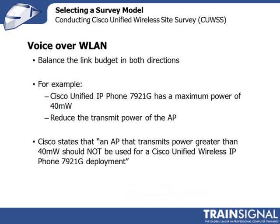IP phones run on a battery and manufacturers want to conserve that battery and make sure the phone is capable of lasting all day. There'd be nothing worse than having to keep running back during the business day to charge your phone. To conserve power, most IP phones including Cisco IP phones will transmit at 40 milliwatts or less.